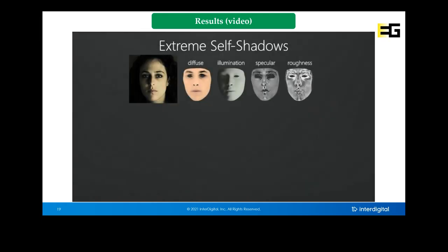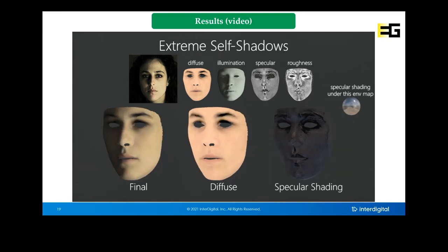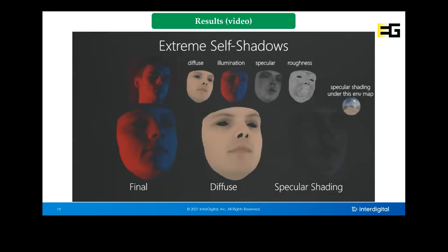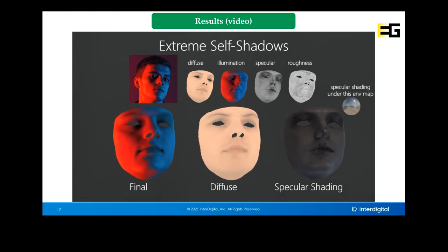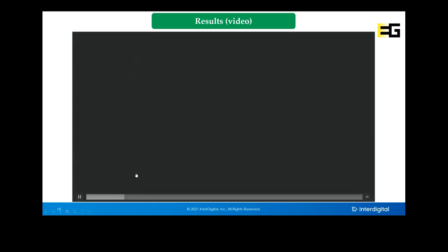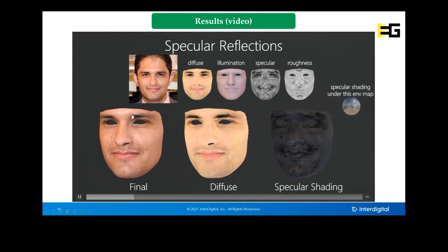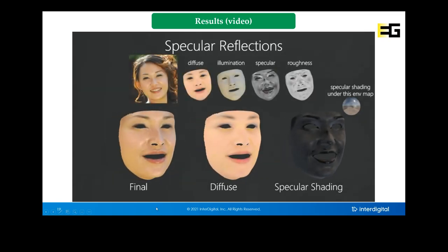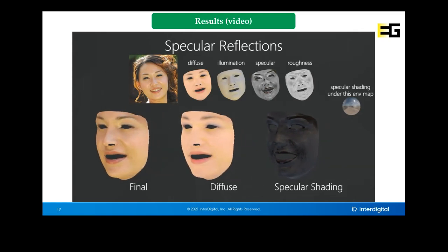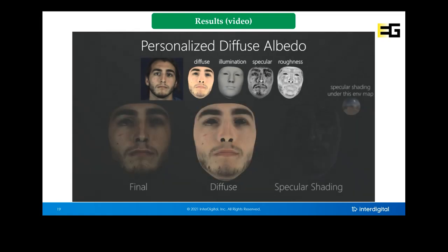We show some animated results obtained by our method. For each subject we show the reconstruction, the diffuse, and the specular shading. We rotate the face with the estimated light, showing specular reflections and highlights on the face that are captured by our method, along with the personalized albedos.